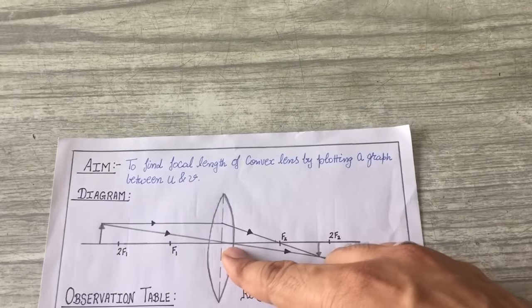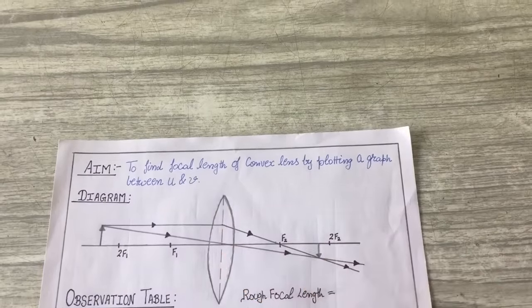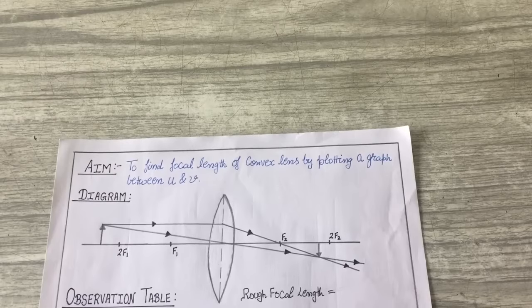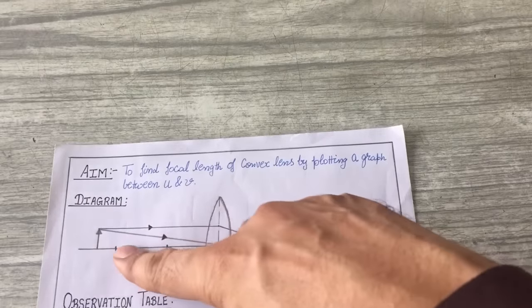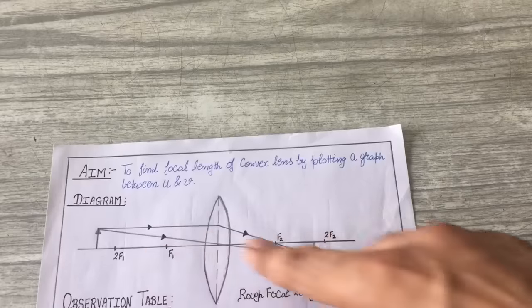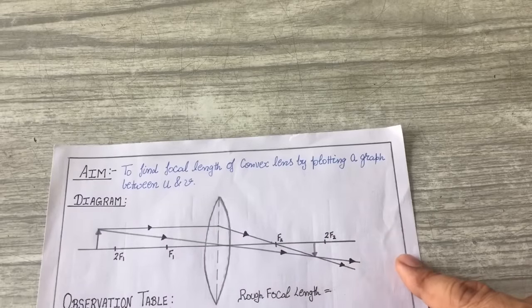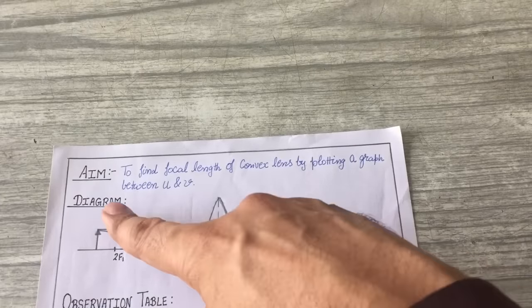In theory class you have drawn different diagrams for six different positions of object with respect to the convex lens, and that knowledge is important for this experiment too. From those ray diagrams we learned that as the object moves closer towards the focus of the convex lens, the image moves away from it, and vice versa.